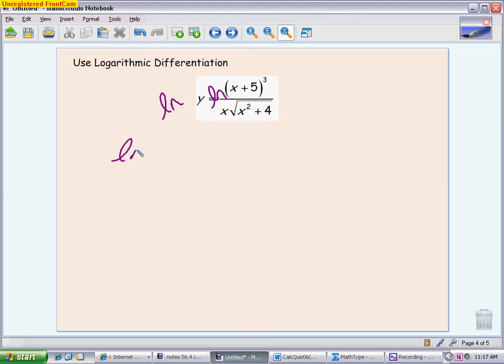I take the natural log of both sides. So I have the natural log of y equals, and now I'm going to really expand it as much as I can. I'll have 3 natural log of x+5 minus the natural log of x minus 1/2 the natural log of x²+4. So I did a big expansion using actually just about every property on there.